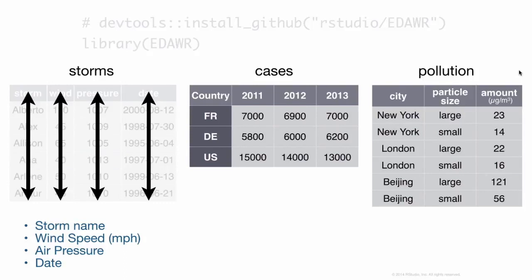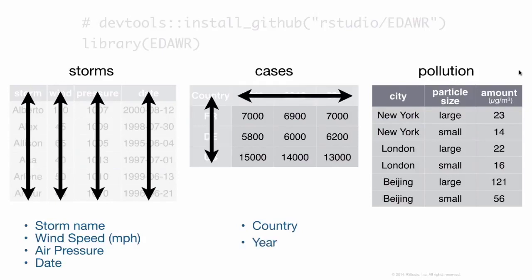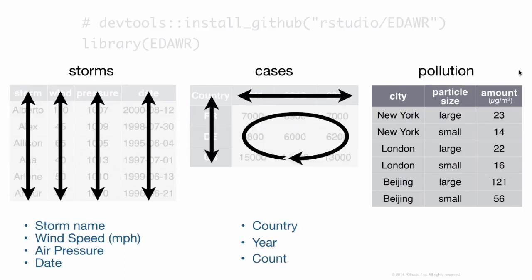In the cases data frame, we have a variable with country codes — France, Deutschland, and the United States. We have a variable listing different years: 2011, 2012, 2013. And a variable that's something like a frequency or count, called n. Comparing cases to storms, you can already see the difference: storms puts each variable in its own column, while in cases one variable is in a field of cells, one is across the column headers, and one is in its own column.